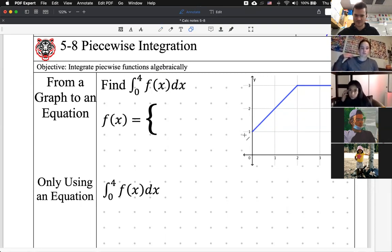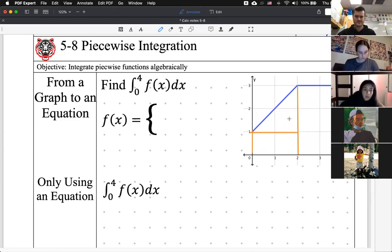Alright, so let's start with the graph first, because if I said, if you're taking the integral between 0 and 4 of f of x, and this is f of x, what is that area? And you guys are all really good at that. You say, okay,